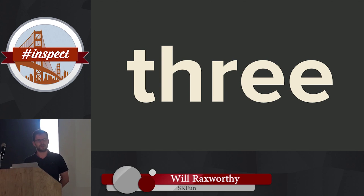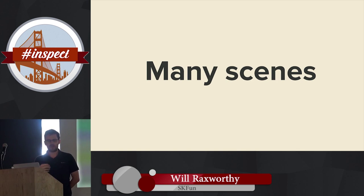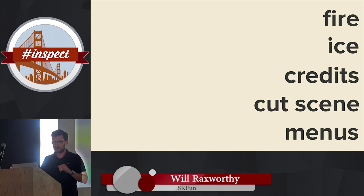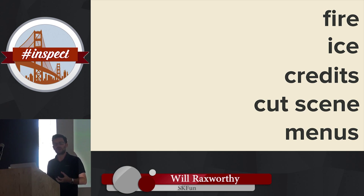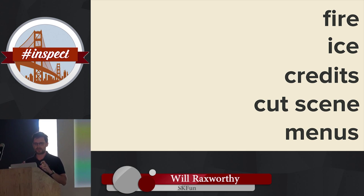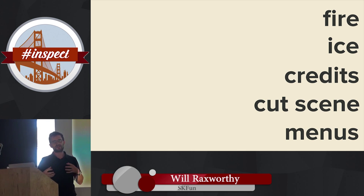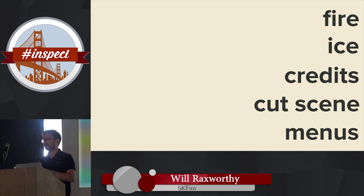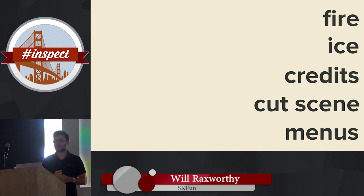Number three: you're going to have many scenes. Scenes encapsulate what's going on in your game — you'll have a scene for each type of screen or level: a fire level, an ice level, credits, cut scene, menu. You'll also want subclass commonality — create classes for your characters defining what they look like, what they shoot, how they die. Create classes so you can just pop them into scenes as you go along.